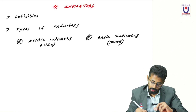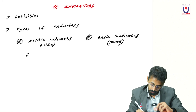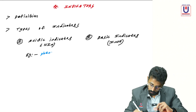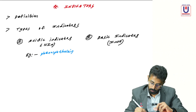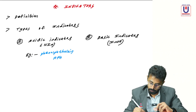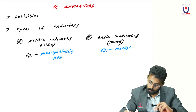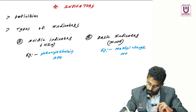An example of an acidic indicator is phenolphthalein, represented as HpH. An example of a basic indicator is methyl orange, represented as MeOH.